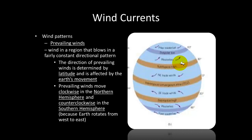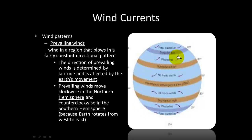The direction that the prevailing winds blow is determined by latitude and also by the earth's movement, because the earth is constantly spinning. Prevailing winds move clockwise in the northern hemisphere and counterclockwise in the southern hemisphere. That is because the earth rotates from east to west.